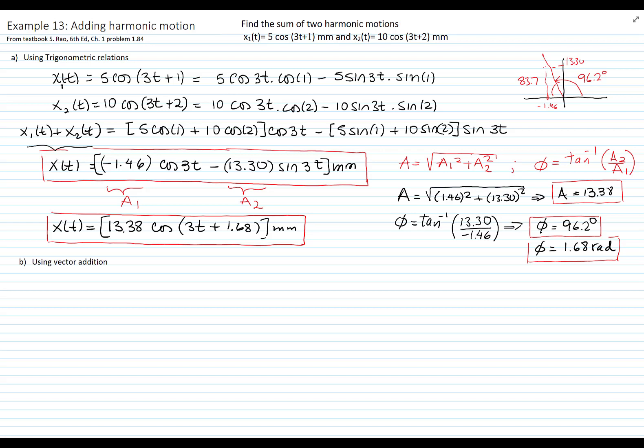Let's do the same problem by now using vector addition. So we have x1(t), that's 5 cosine of 3t plus 1. The magnitude of this harmonic motion is 5 and the phase angle is 1, and 1 radian is equal to 57.3 degrees.